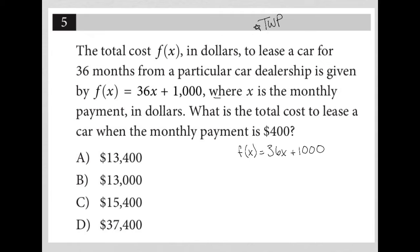So we were just told x is the monthly payment. Now we're told that the monthly payment is $400, and we want to know the total cost. We're told that total cost is f of x, so I'm just solving for f of x where I know that x is 400.